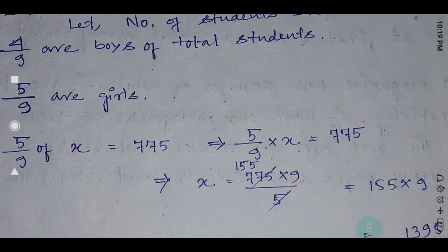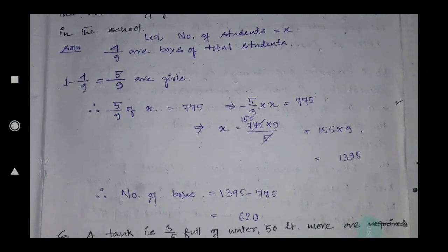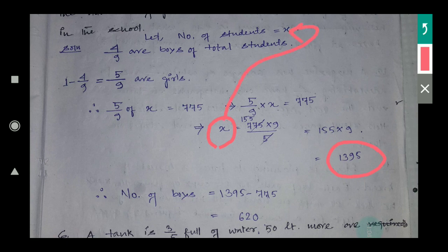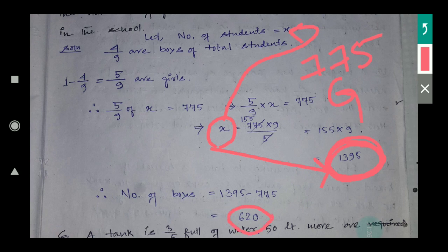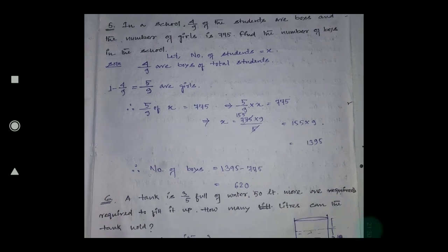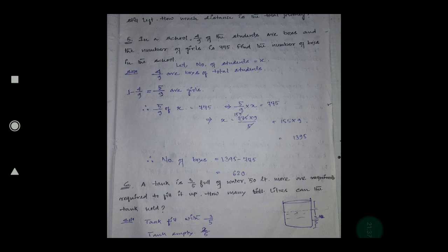So x equals 1395 is the total number of students. Among 1395 students, 775 are girls. So the number of boys equals 1395 minus 775. You must understand the question word by word to write systematically — understand what to assume, what to find, and what value to take as the unknown.